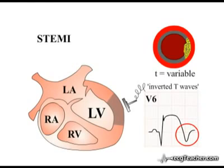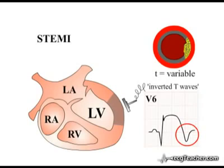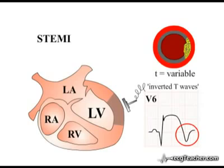T wave inversion may occur early in the hours following vessel occlusion, may take days to develop, or may not occur at all. The mechanism underlying this change is controversial. The process of clot formation in acute MI is dynamic, and there is some evidence that T wave inversion may actually reflect reperfusion of the area as the vessel re-cannulates, either spontaneously or in response to treatment. In support of this, flipped T waves are commonly seen shortly after thrombolytic therapy is initiated for STEMI. Flipped T waves generally return to the upright configuration within the week following infarction, but can occasionally persist as a permanent marker.